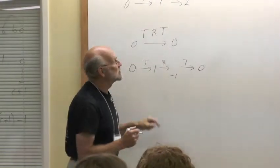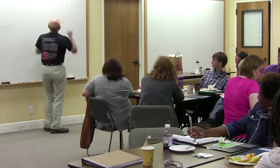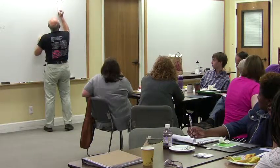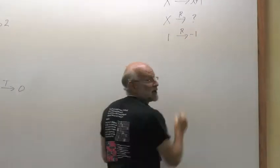So in other words, we don't know what R does in general, but we do know that if you start with 1 and you do a rotate to it, you get negative 1.